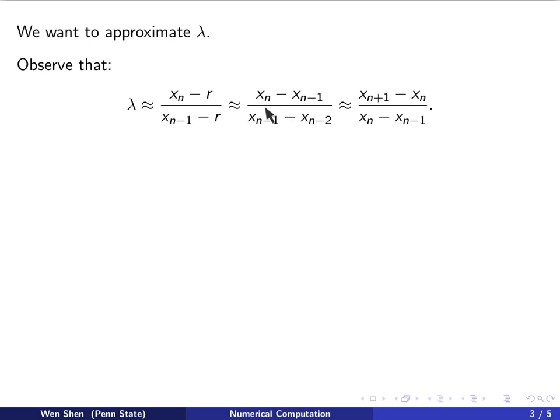one can also express this as the distance between Xn and Xn minus 1 over the distance between Xn minus 1 minus Xn minus 2. And you can increase the index by 1 and then you will get this relation as well.